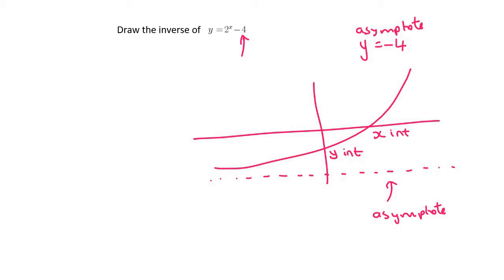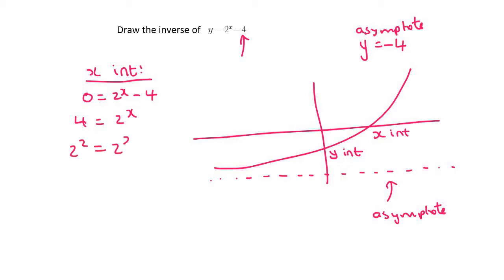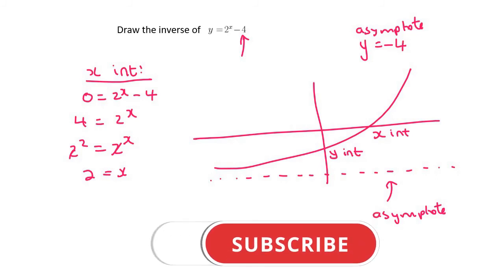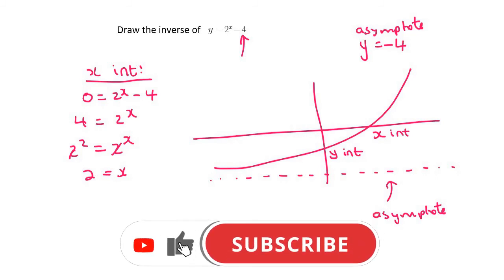To find the x-intercept, we will make y equal to 0. Then you can take the 4 over. Since 4 is the same as 2 to the power of 2, you can cancel the 2s, and x would be equal to 2. So our x-intercept is going to be (2, 0).